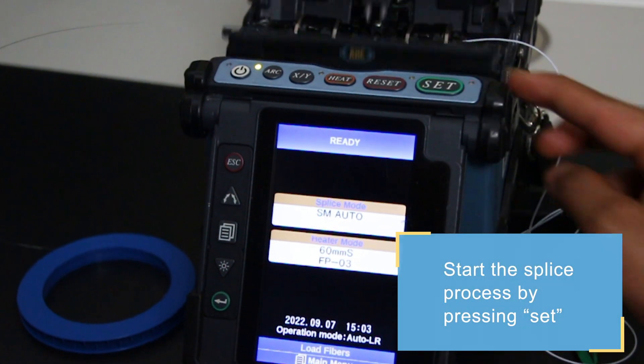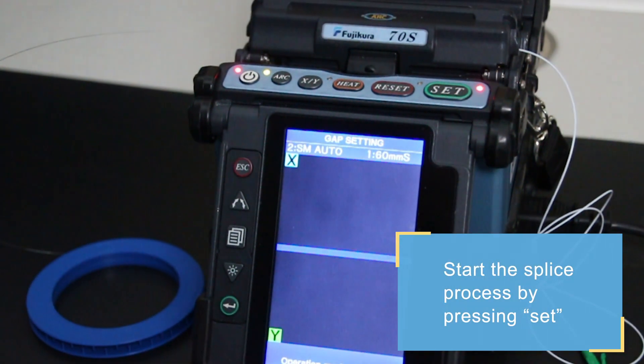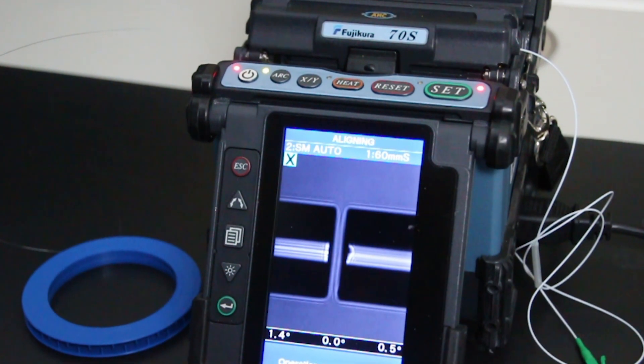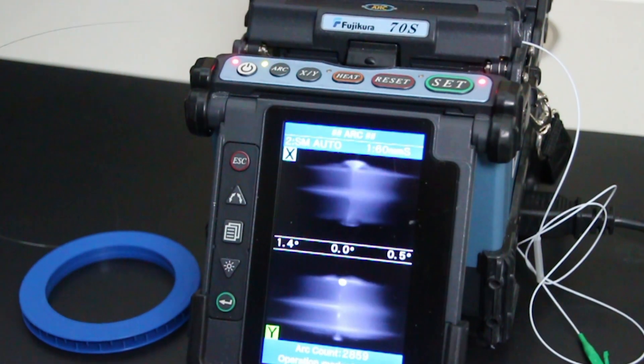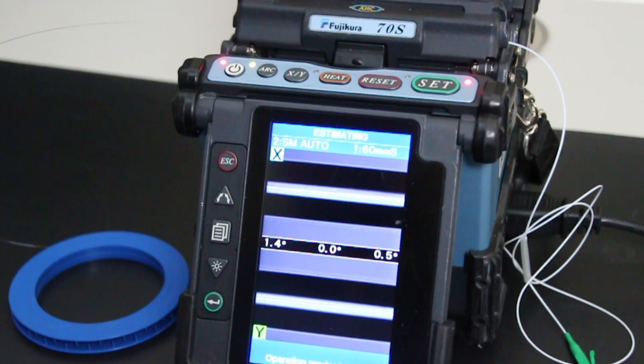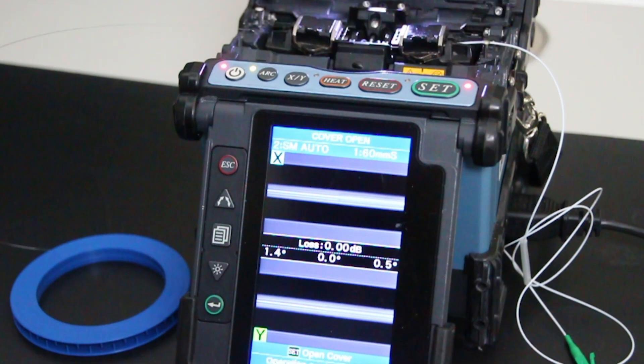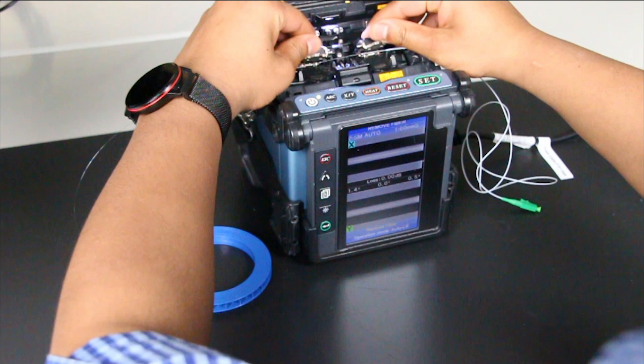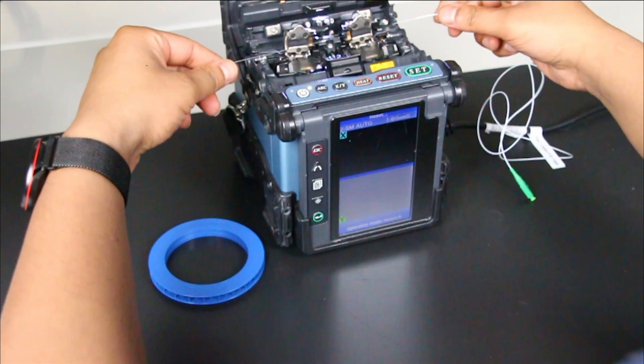Start the splicing process. Simply press SET and let the splicer do the work. The fiber is now spliced, and you can carefully remove it from the splicer.